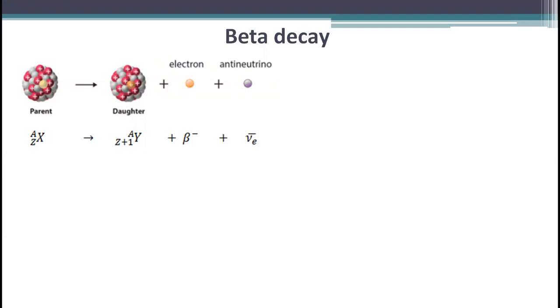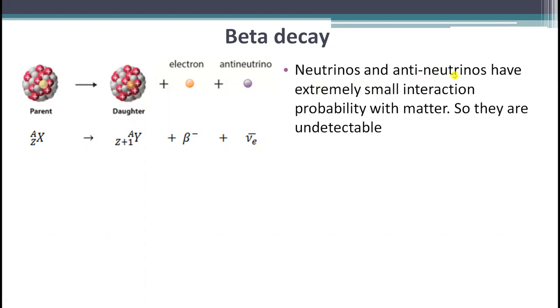The most common source of fast electrons in radiation measurements is negative beta decay. Here a parent nucleus X is transformed to a daughter nucleus Y with the emission of electrons and an antineutrino. Neutrinos and antineutrinos have extremely small interaction probability with matter, so they are undetectable for all practical purposes. The recoil nucleus has very small recoil energy and therefore it cannot be detected easily by conventional means.